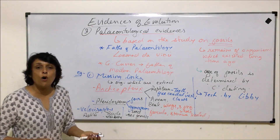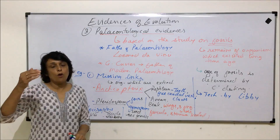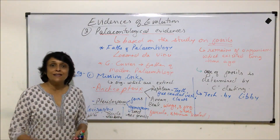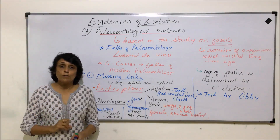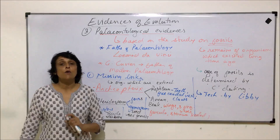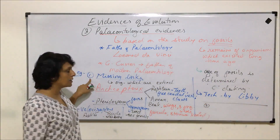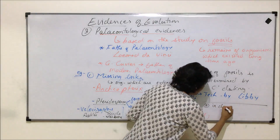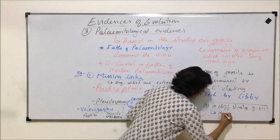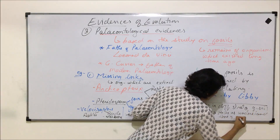The second evidence under paleontology is the strata of soil in which an organism was found. We can determine how many million years ago a particular stratum was formed, so if fossils are found in that stratum, it indicates those organisms existed that many years ago when that layer of the earth was being formed. This helps us understand the time of evolution.